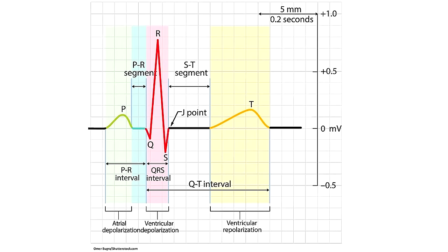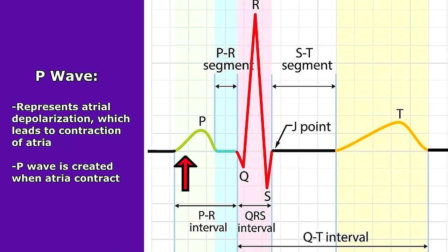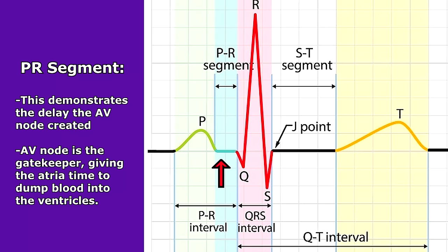Next, memorize the PQRST complex and all the extras found within it. First, the P wave represents atrial depolarization, leading to contraction of the atria, which is created by the SA node. Whenever those atria contract, it creates this little wave. Right after the P wave and before the QRS complex, we can find the PR segment, which demonstrates the delay the AV node created. Remember, it was the gatekeeper, so it gave the atria time to dump blood into the ventricles before the ventricles contracted.